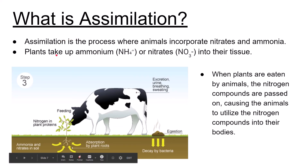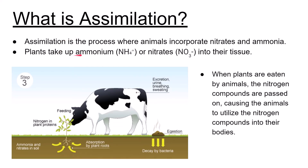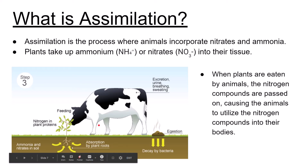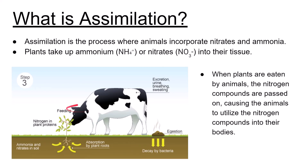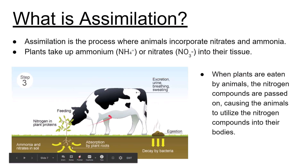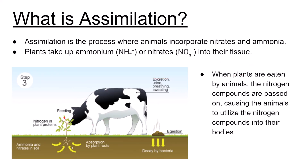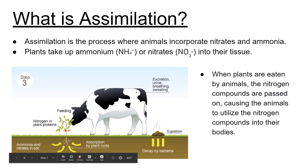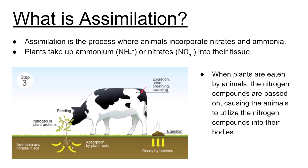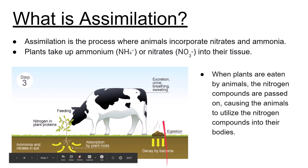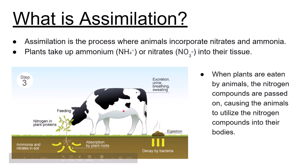Assimilation is the process where plants and animals incorporate nitrates and ammonium into their tissue. Plants take up ammonium or nitrates and incorporate nitrogen into their stems and leaves. When the plants are eaten by animals, these nitrogen compounds are passed on, and the animals utilize the nitrogen compounds in their bodies. For example, a cow eating a plant takes that nitrogen into its body, and its excretions — urine, breathing, sweating — all contain nitrogen. When the cow dies, all of that nitrogen in its body moves back into the ground.